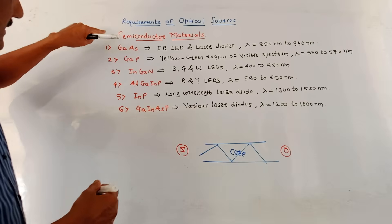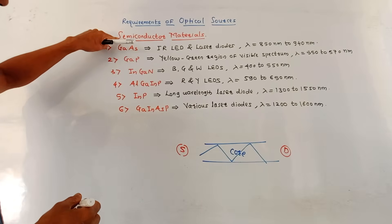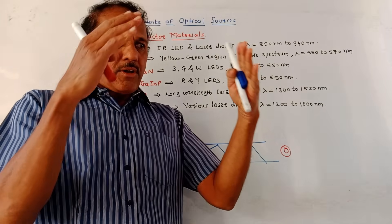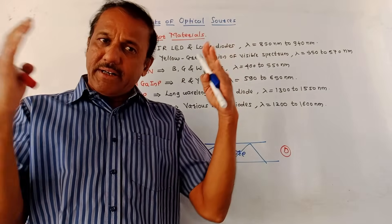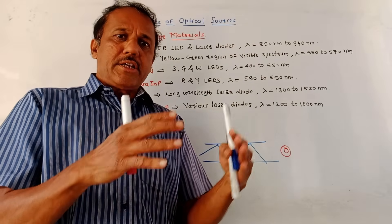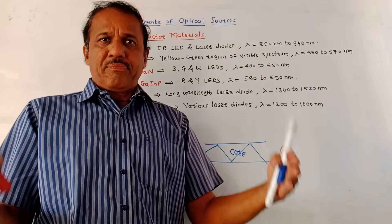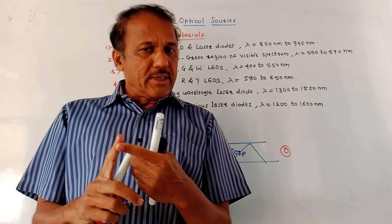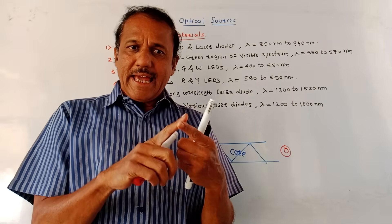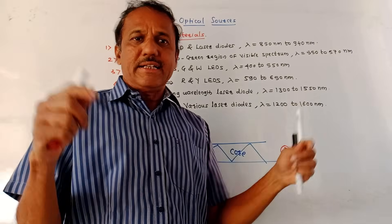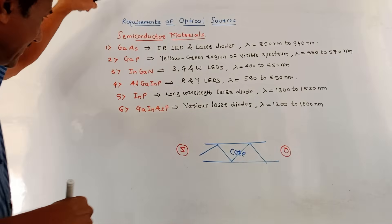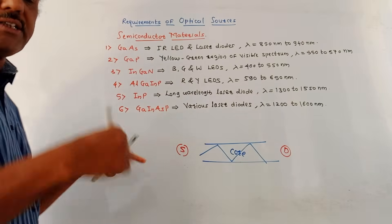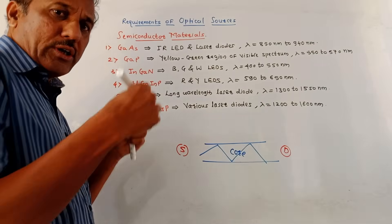Now let us discuss the different semiconductor materials. From the exam point of view, you may expect a question like: what are the different semiconducting materials used in case of optical sources? In fiber optic cable, two major types of optical sources are used — one is LED, that is light emitting diode, and another is a laser diode. The following is the list of semiconducting materials used to manufacture the LED or laser diode.